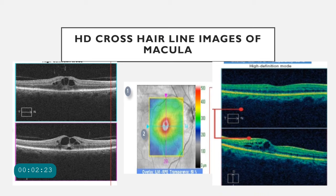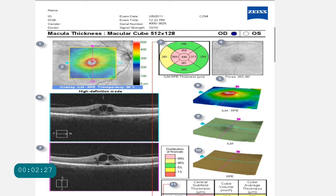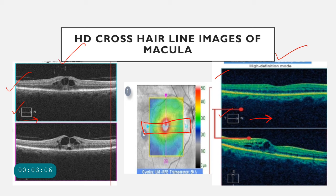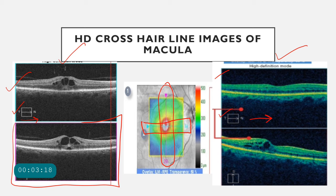After that, we have the HD cross-hairline images of the macula. You can have black and white images or color-coded images. The first image represents the cross-hairline image taken in the horizontal direction — from temporal to nasal, as indicated by the arrow in the box. The pink box represents the vertical cross-line image taken from the macula. So this is the vertical cut of the macula, and both the horizontal and vertical cuts are the high-definition cross-hairline images of the macula.